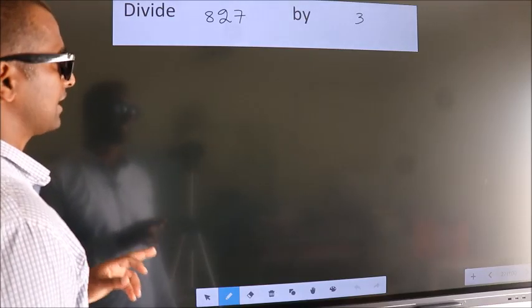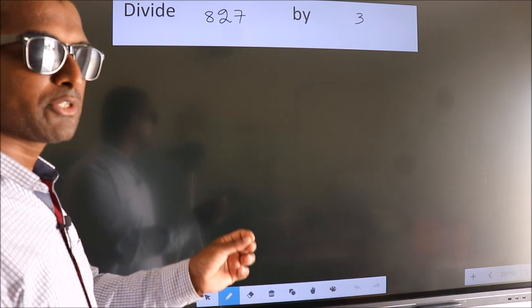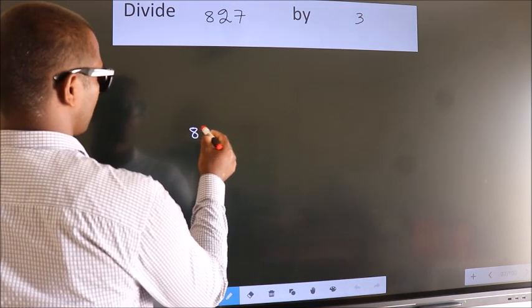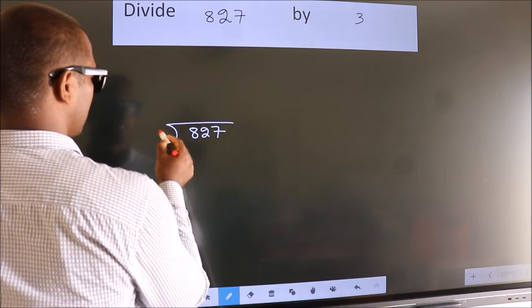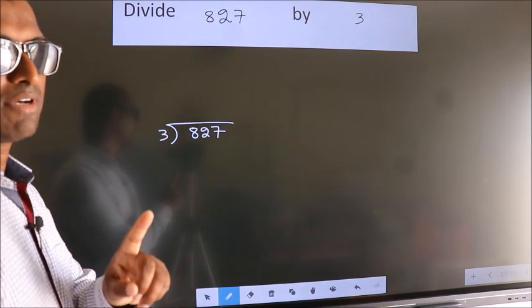Divide 827 by 3. To do this division, we should frame it in this way. 827 here, 3 here. This is your step 1.